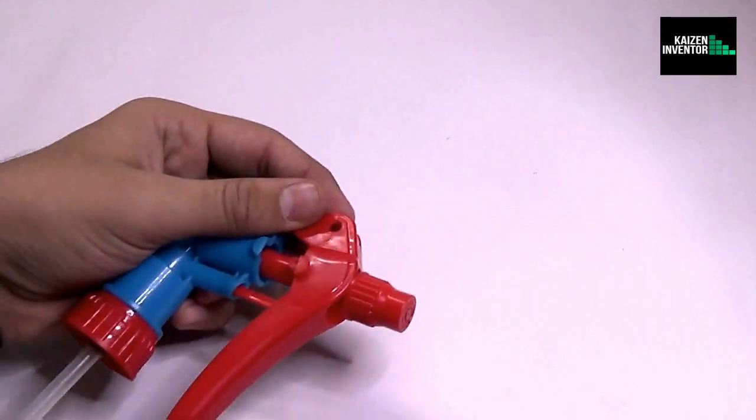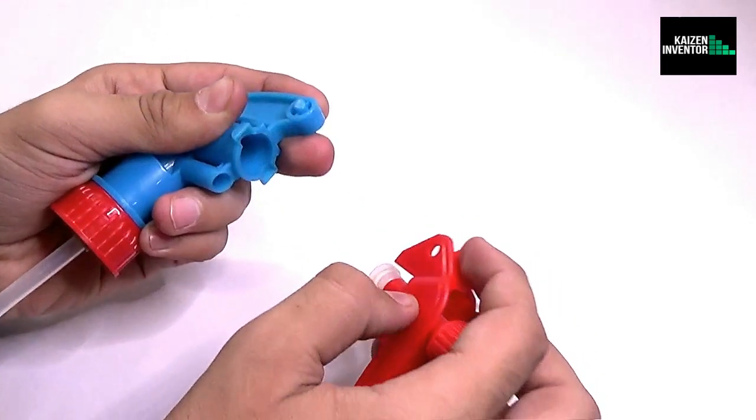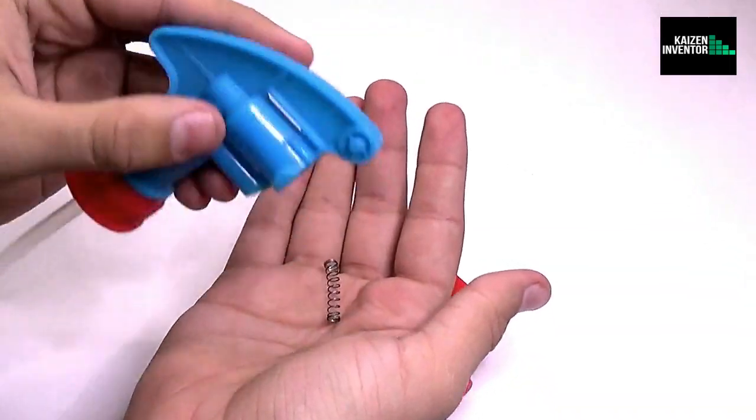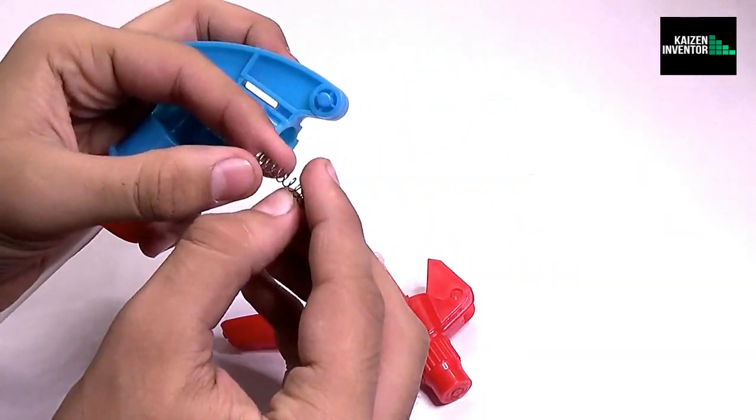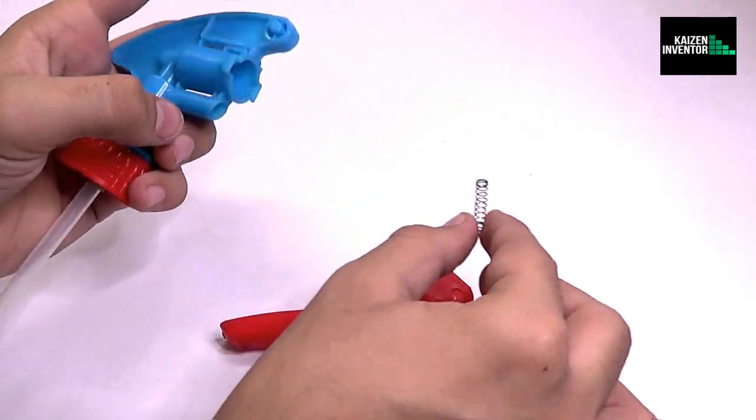Alright, so step one is to grab the sprayer and you want to open the sprayer from this pivot point and you would probably find a spring inside. So you want to discard the spring, or if you have any low power spring then you can attach it so